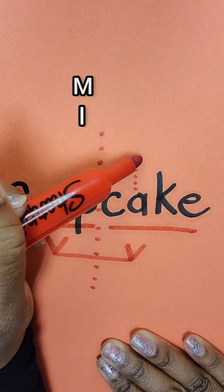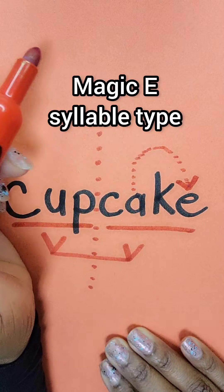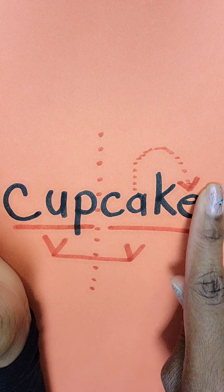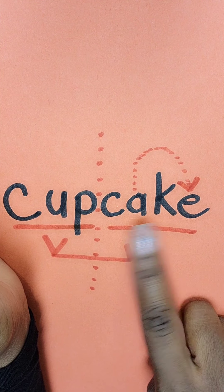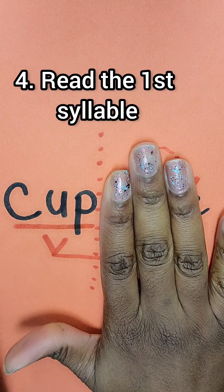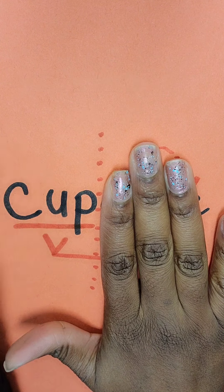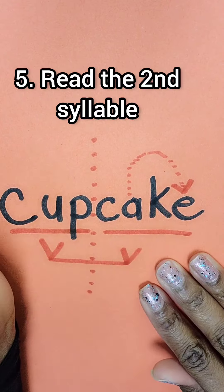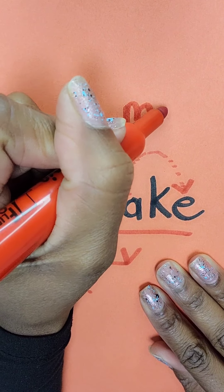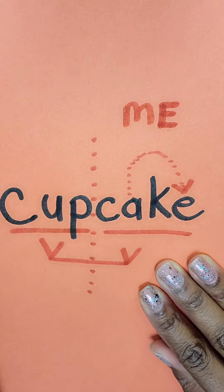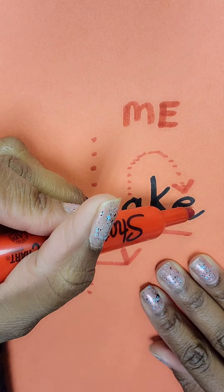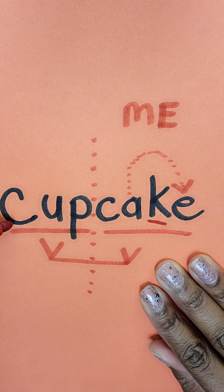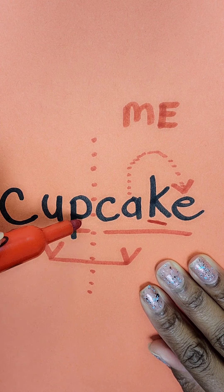They have to recognize that there is a Magic E, and this is why it's so important for kids to understand long vowel sounds. This does not say 'k-ak' — you need to know that the Magic E gives a long vowel sound, so this says 'cake.' We sound out the first syllable: 'cup,' then the second syllable: 'cake.' The Magic E is the long vowel syllable pattern with a silent E at the end and a consonant in between — a C-V-C pattern: consonant, vowel, consonant.